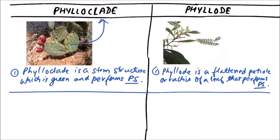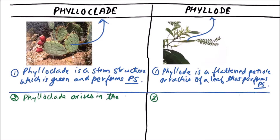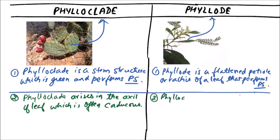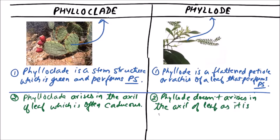So this is a phylloclade while this one is a phyllode. A phylloclade arises in the axil of a leaf, which is often caducous — that is, it falls in early stages — while the phyllode does not arise in the axil of a leaf, as it is itself a part of the leaf.